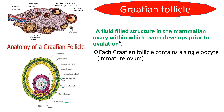Next, there is a cluster of cells that completely surrounds the egg, shown in dark orange color. These represent the cumulus oophorus. Outer to the cumulus oophorus, there is a white-colored empty portion called the antrum. This antrum is filled with fluid called the liquor folliculi.